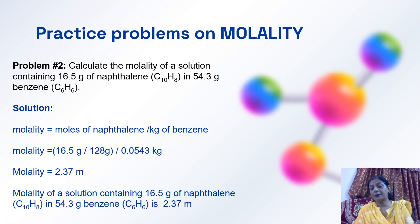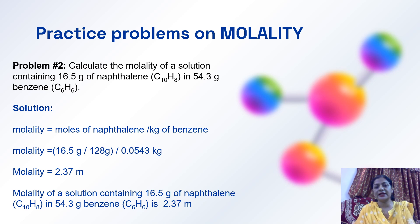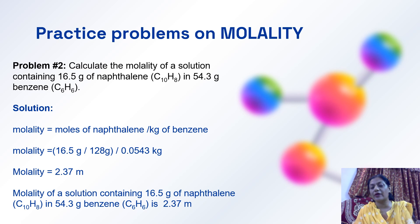Another problem on molality: Calculate the molality of a solution containing 16.5 grams of naphthalene (C10H8) in 54.3 grams of benzene (C6H6). Molality equals moles of naphthalene per kilogram of benzene. Putting the values in the formula, molality comes out to be 2.37 molal.